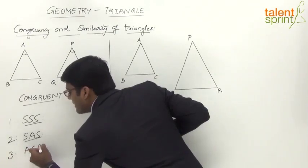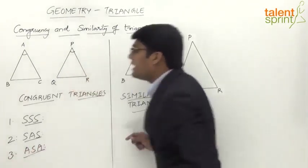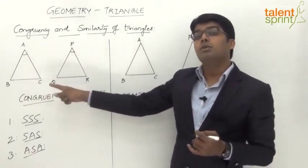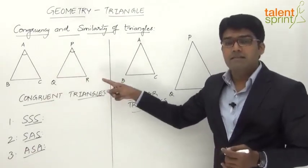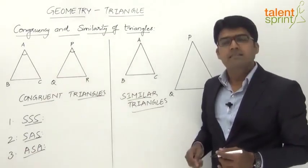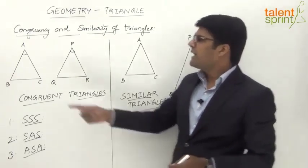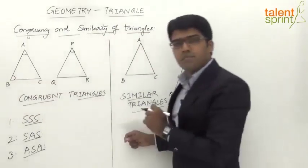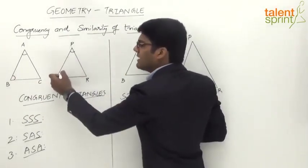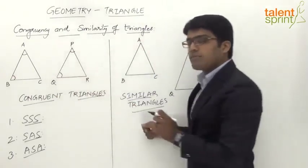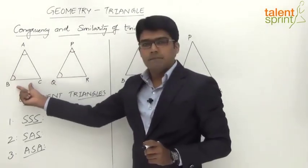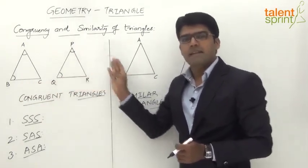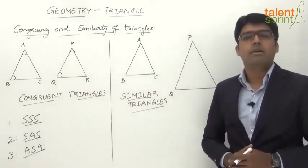The third is ASA congruency — Angle Side Angle congruency — which says if any two angles of the first triangle and one of its sides are equal to the corresponding two angles and the corresponding side of the second triangle, the triangles are congruent. For example, angle A, angle B, and side BC equal to angle P, angle Q, and side QR.